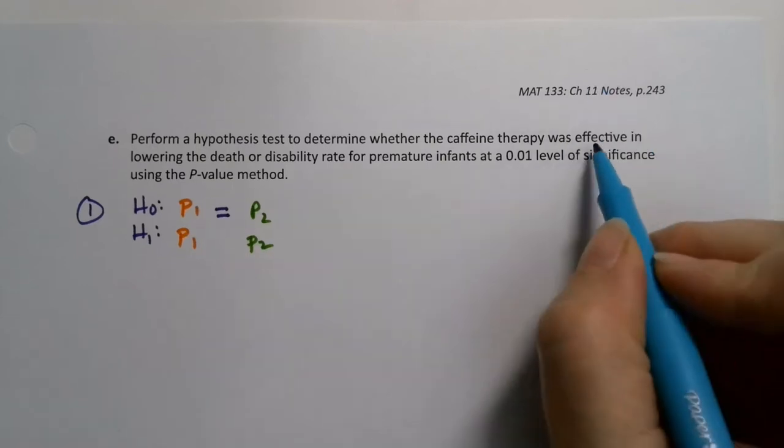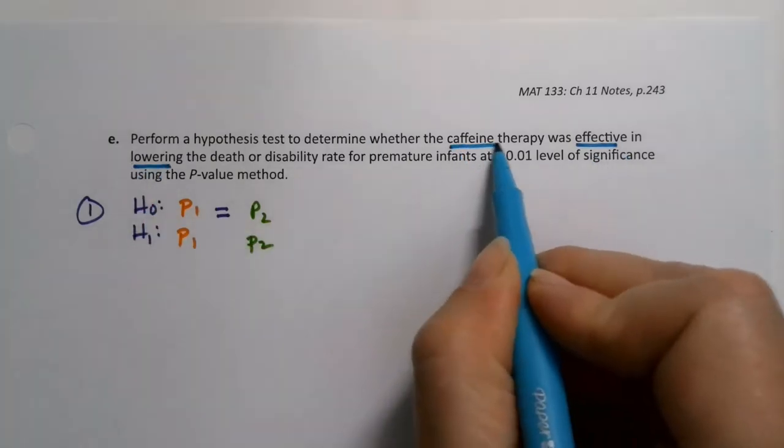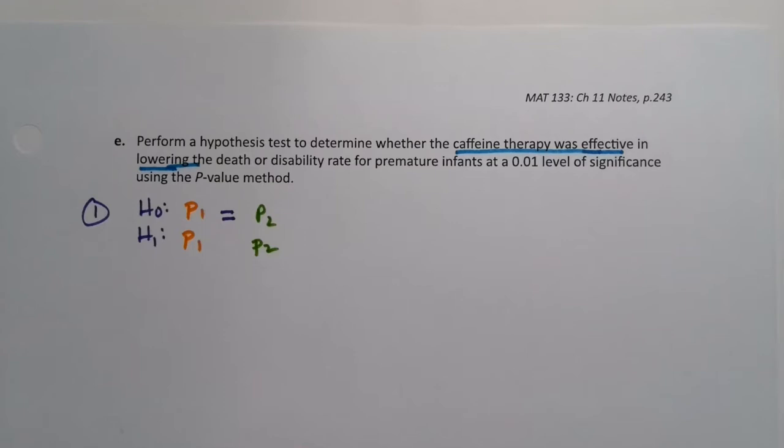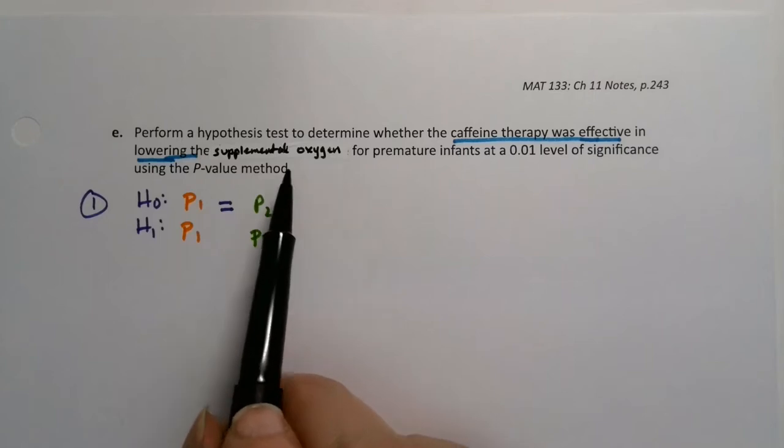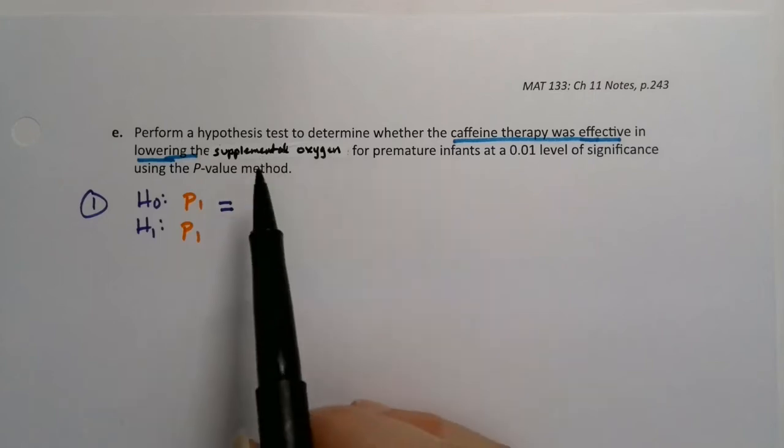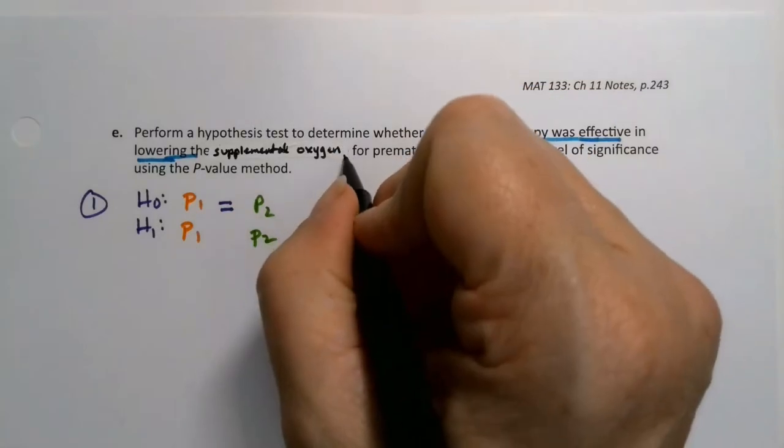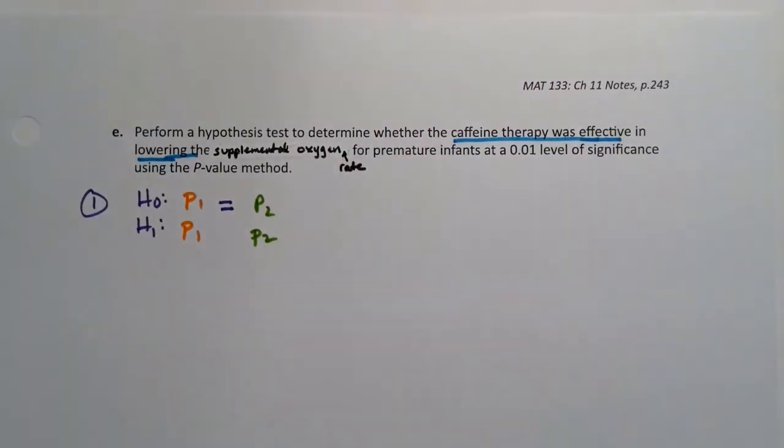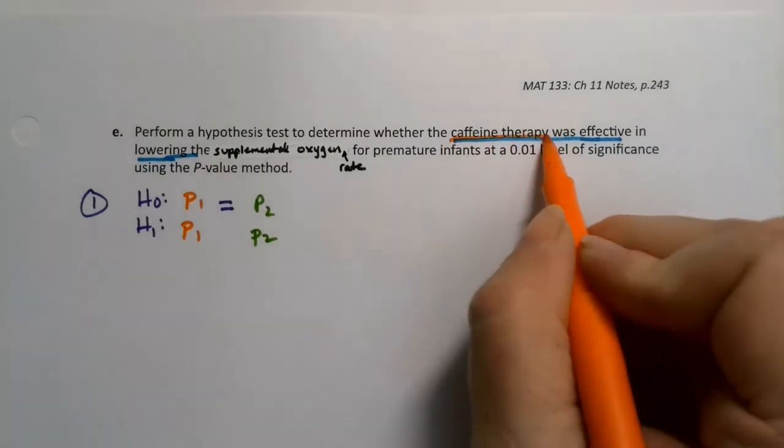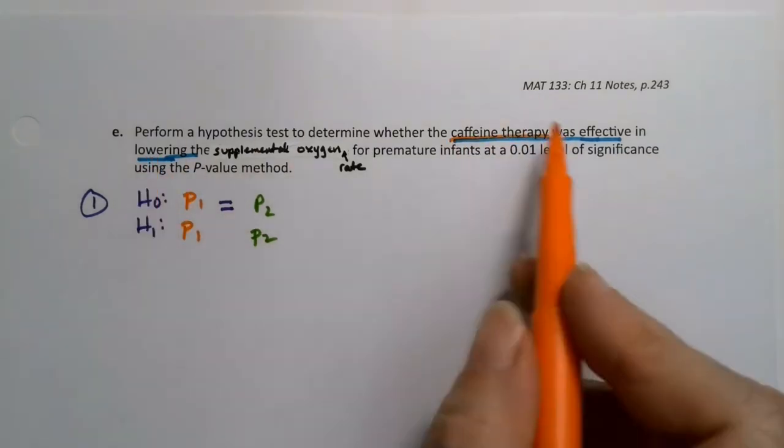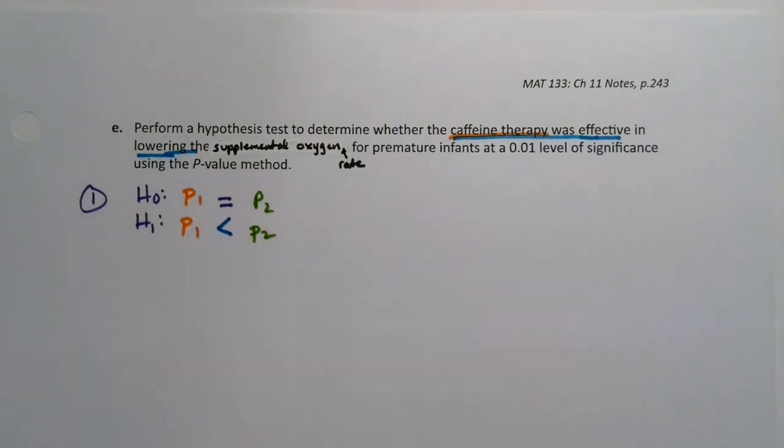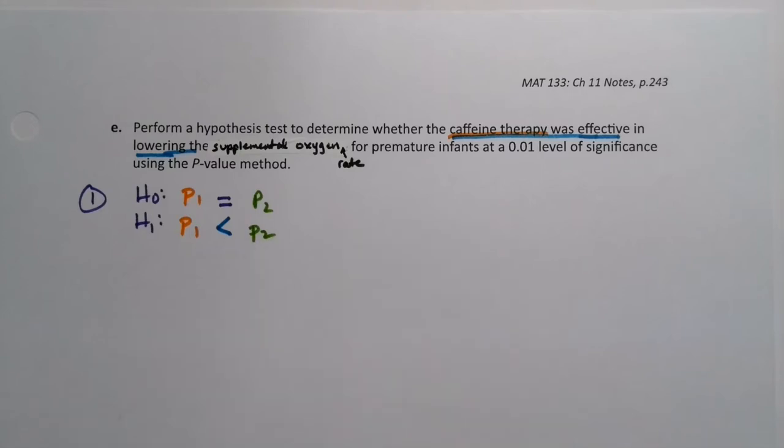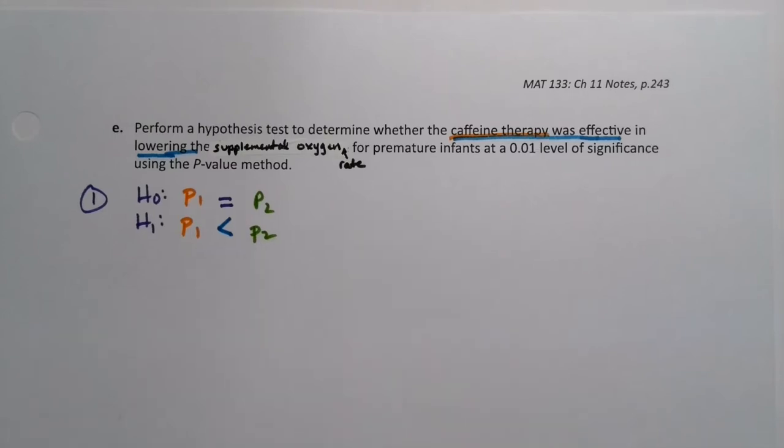And so now the real trick is trying to figure out which way I have to go with that second value. And it's all in the words up here. Was it effective in lowering? Was caffeine effective in lowering the death and disability rate? Actually, I should change that to, sorry, the supplemental oxygen rate. There was originally a different data set here. So is it, was it effective in lowering the supplemental oxygen rate for the premature infants? You want caffeine to be effective in lowering. You want the caffeine group to be lower than the placebo group. And so that means that you want this to be a less than right there, because you want the caffeine group to be lower than the placebo group for needing supplemental oxygen.